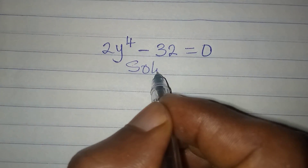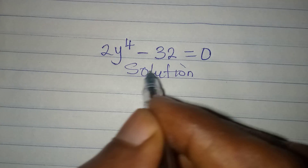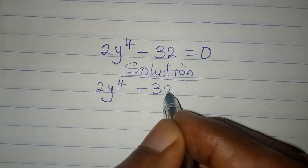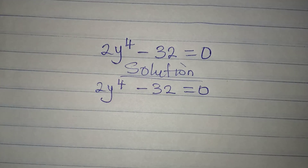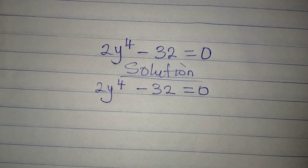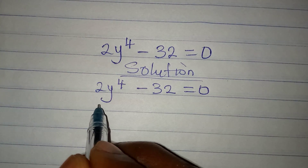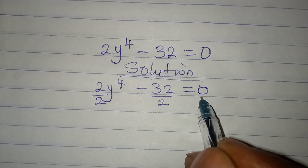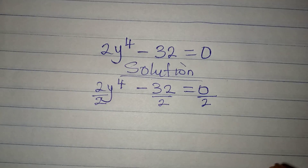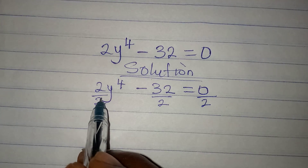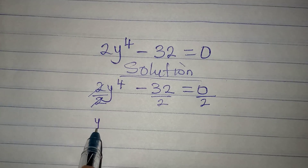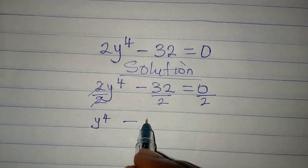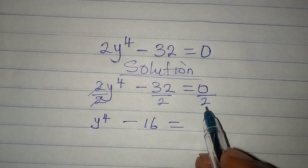Hello everyone. Let's provide the solution to this problem: y to the power 4 minus 32 equals 0. I want us to solve this completely. 2 can be found in 32, so we can divide this by 2, divide this by 2, and equally divide this by 2 — because what you do on one side you must do on the other side. This cancels, and we have y to the power 4, and 32 divided by 2 gives 16.